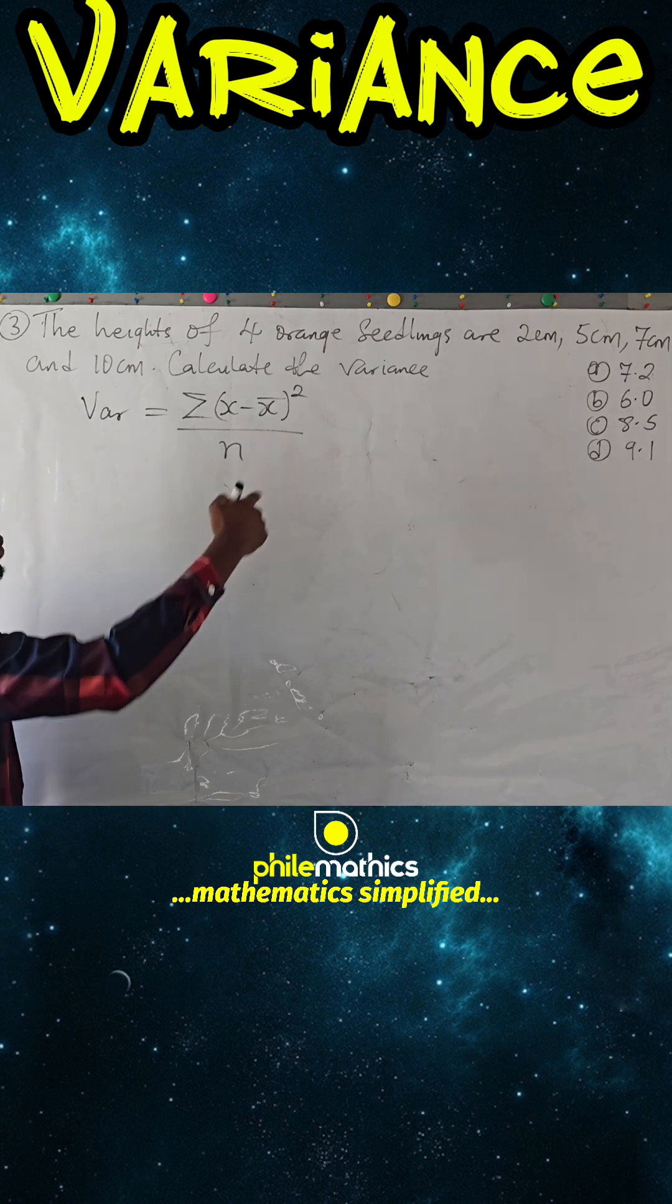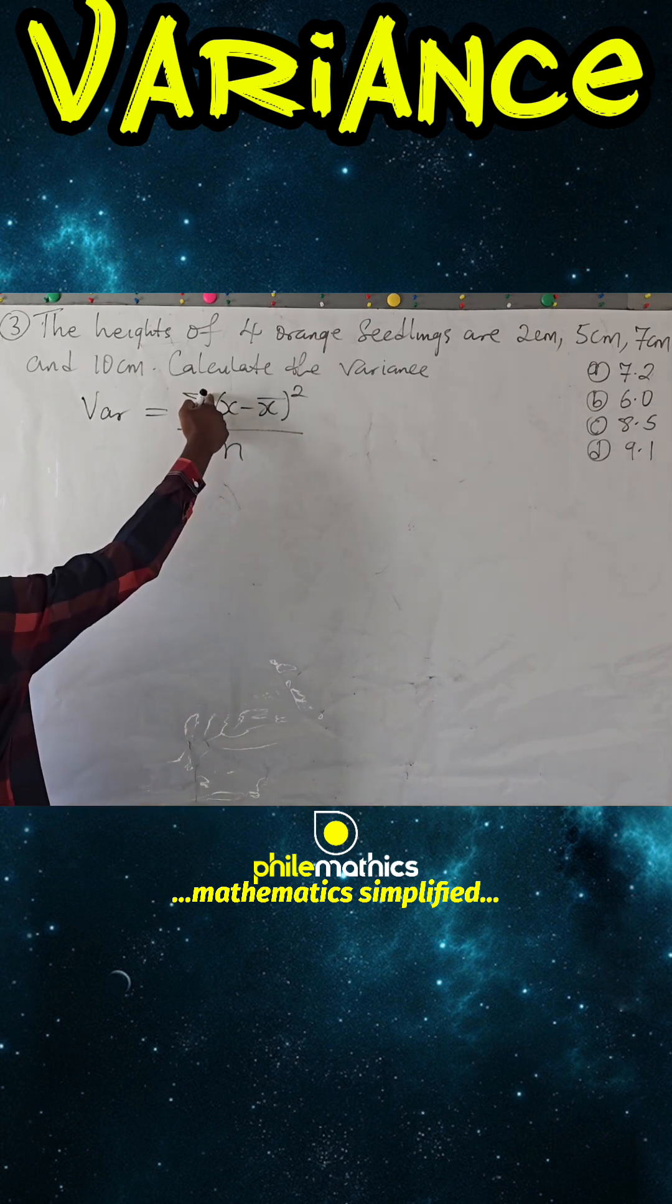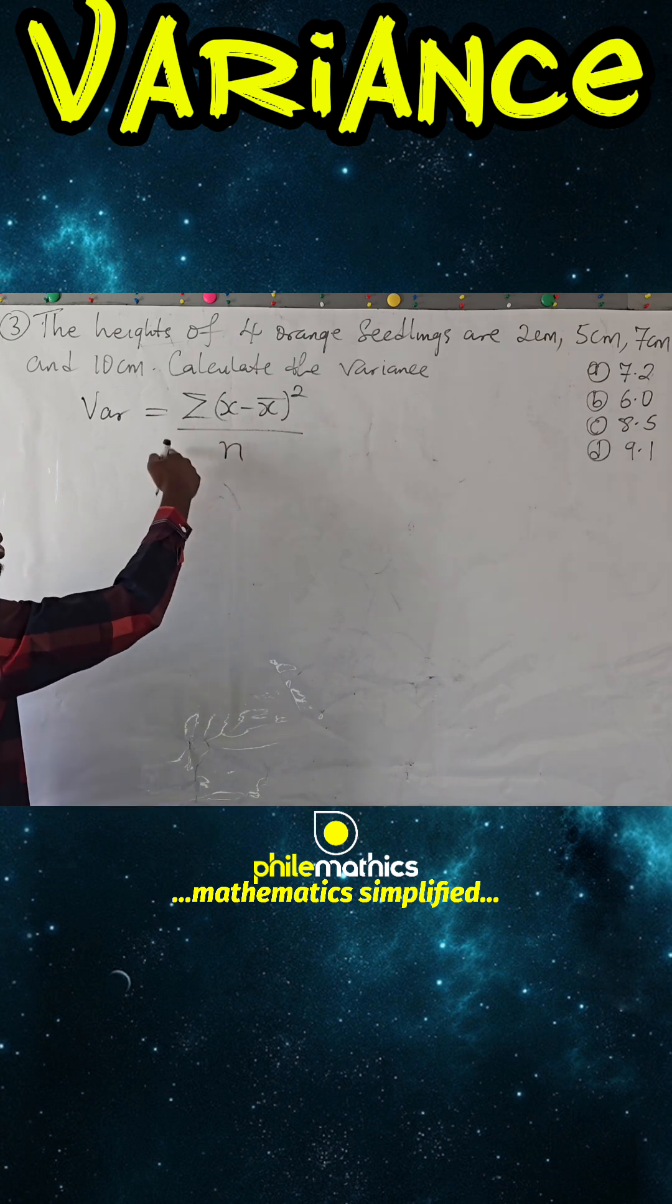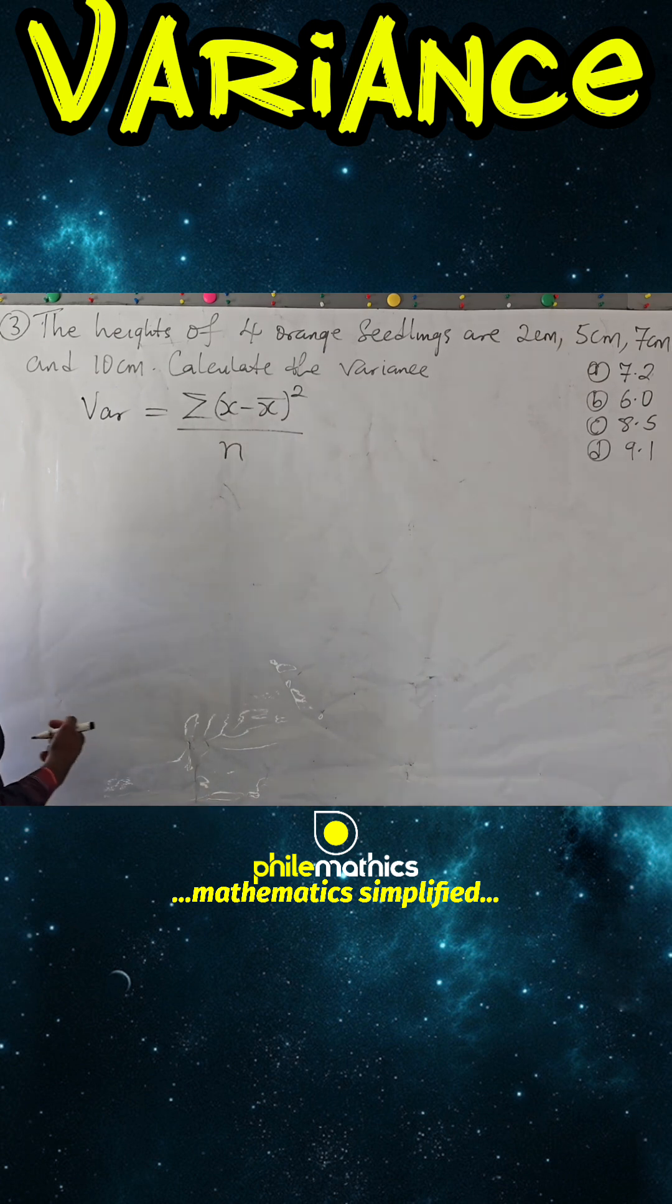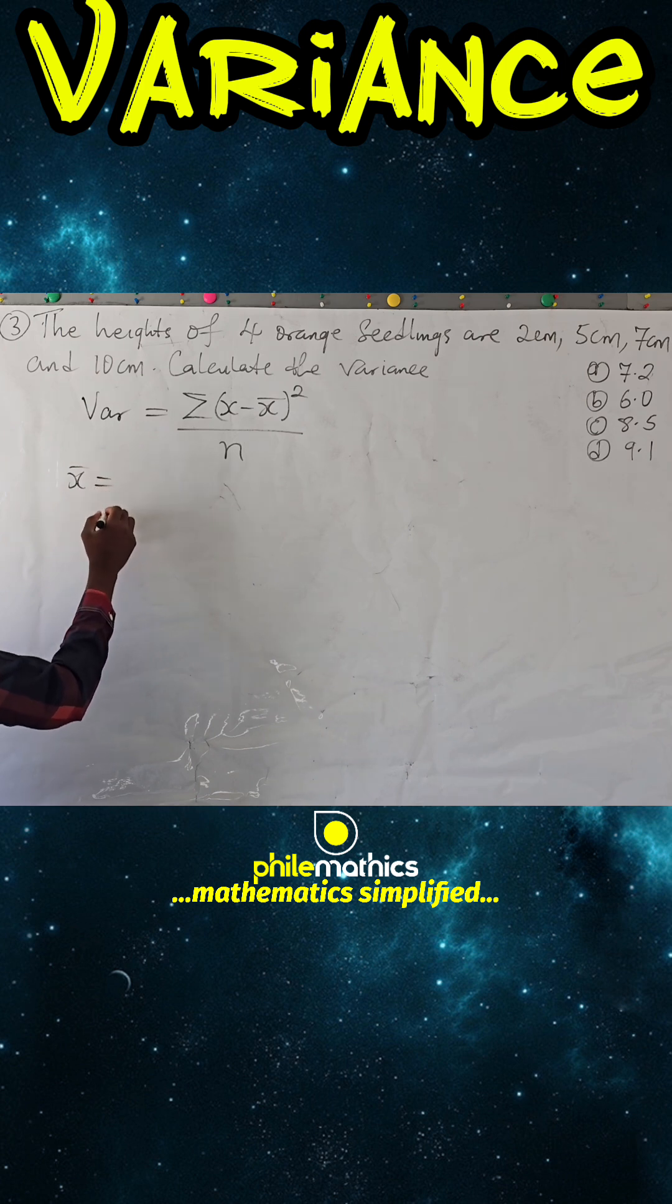We just have a few data here, so we don't have to add f. Otherwise it would be summation of f of this over summation of f, and so the mean is simply summation of x over how many data there are.